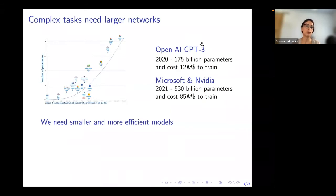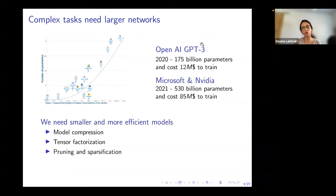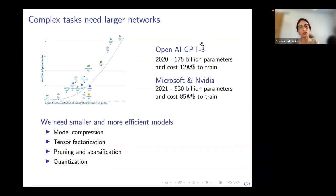This question has drawn the attention of researchers for a few years, and we have different avenues. The first is model compression, where we try to create smaller architectures. We can also think about tensor factorization — since most neural network operations are matrix multiplications, factorizing them yields a smaller structure. The third avenue is pruning and sparsification, which is the focus of this talk. We also have quantization, which is another way of creating smaller networks with less latency.